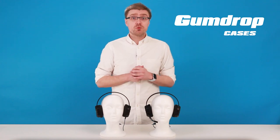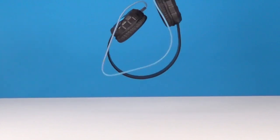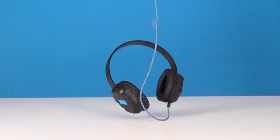Best of all, DropTech rugged headphones and headsets are kid-tested to protect against drops of up to 4 feet, so you know they're tough enough to stand up to almost anything your students can put them through.